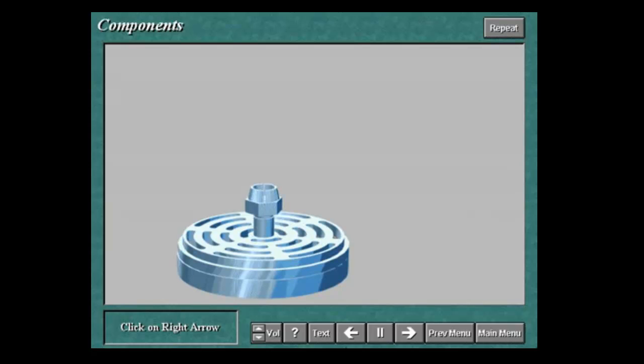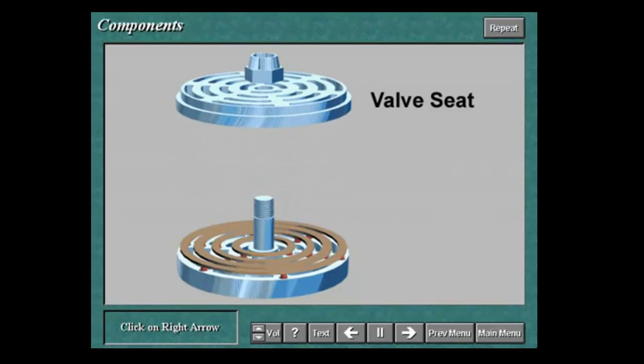The valve seat is the circular component through which the flow ports are opened. It is sealed by the valve shutter. The seat and valve shutter together mechanically support the pressure differential.